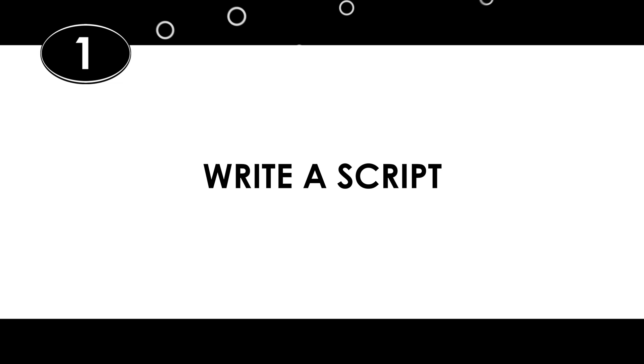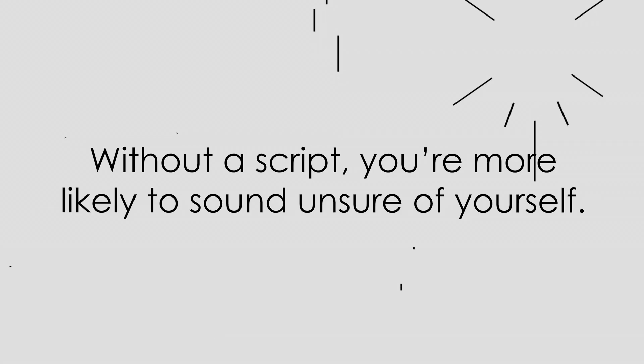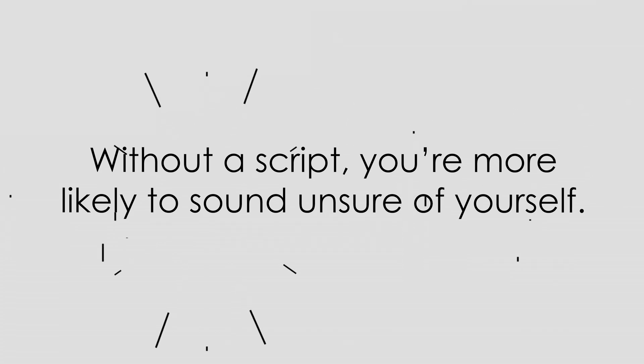Step one: write a script. That's right, write it down. Don't wing it. Because you know what happens when you wing it? You end up saying um and ah a lot. And you repeat yourself — like saying the same thing over and over again, making the same point several times. Or you might leave something out. And on top of it, without a script, you're more likely to sound uneasy and unsure of yourself. When these things happen, you'll spend tons of time in the edit taking out the ums and the ahs and re-recording the stuff you left out. In the end, you'll spend more time editing than you would have if you'd just written a script in the beginning. And it'll end up looking sloppier.